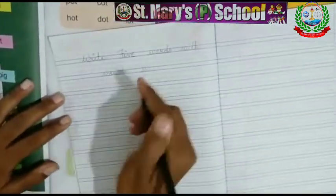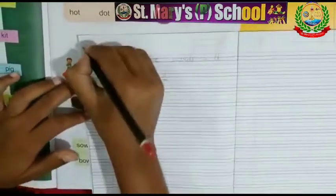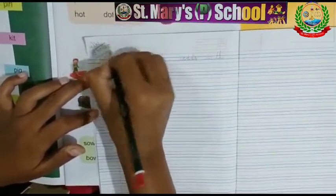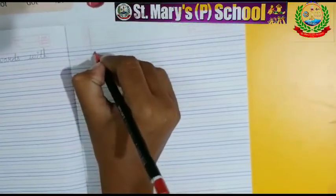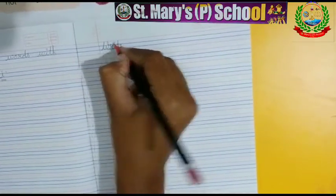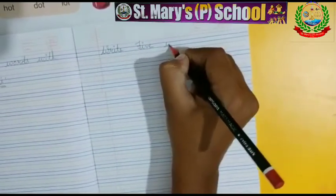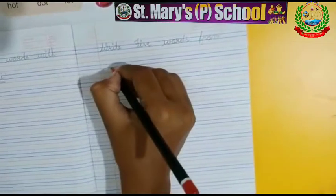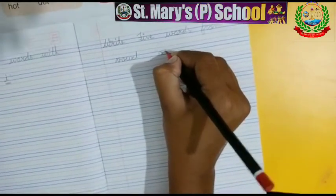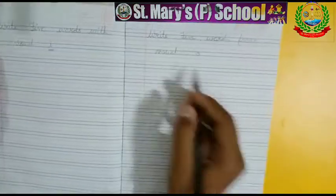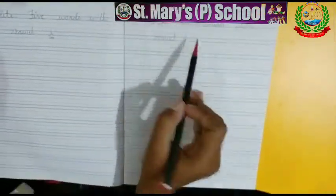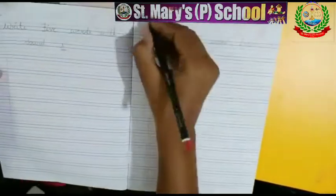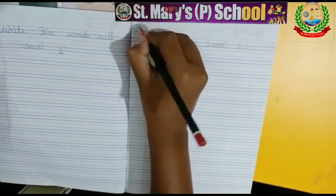यहाँ आपको vowel O से five words लिखने हैं. यह आपका आज का homework है. आप लोग यहाँ HW डालेंगे और आज का date mention करेंगे: 9th of October 2020. Next page में आप लिखेंगे: Write five words from words with vowel O जो कि मैंने आपको अभी पढ़ाया. उन्हें याद करके vowel O से five words यहाँ पे लिखने हैं. ये भी आपका homework है, तो आप यहाँ HW डालेंगे और आज का date डालेंगे: 9th of October 2020.